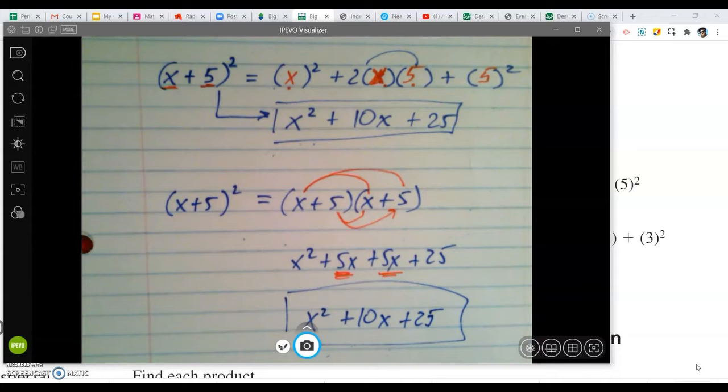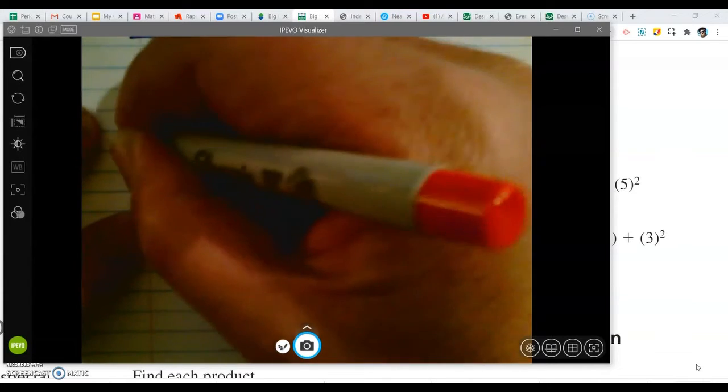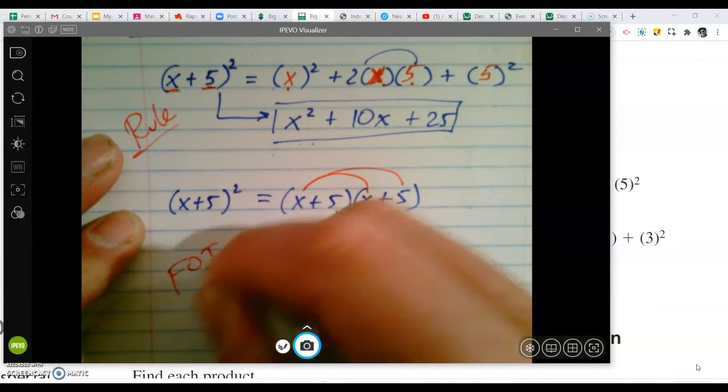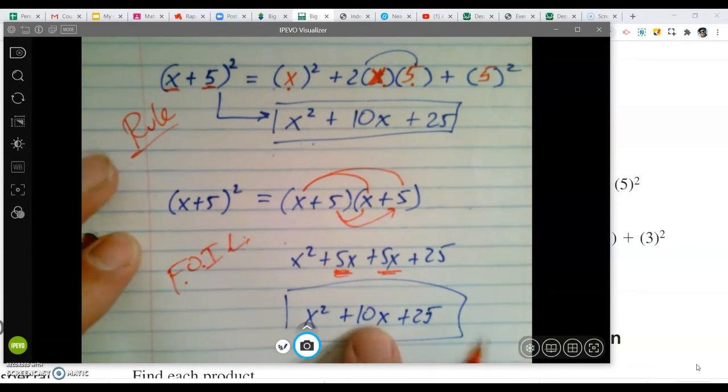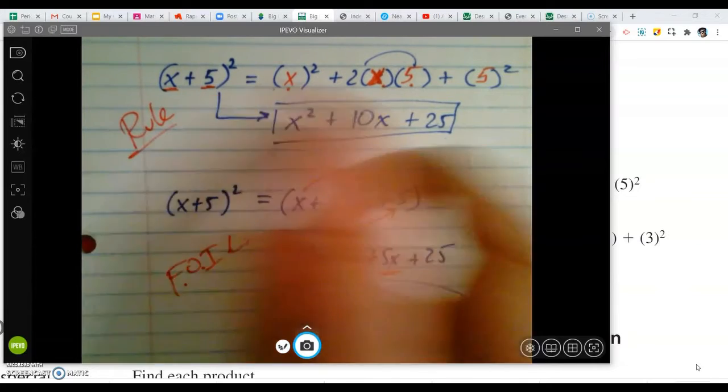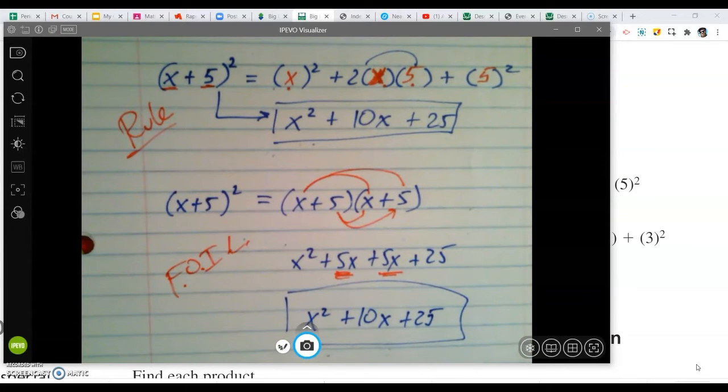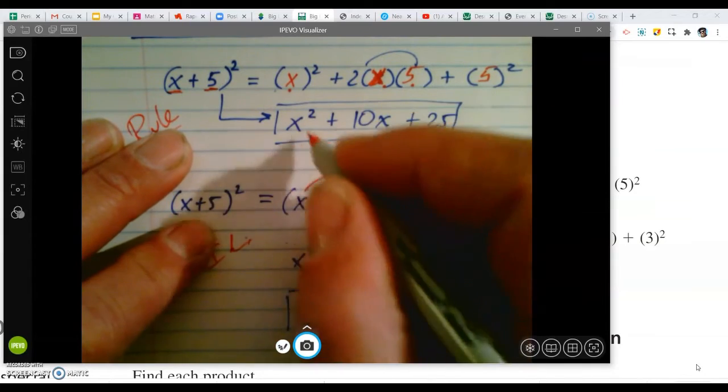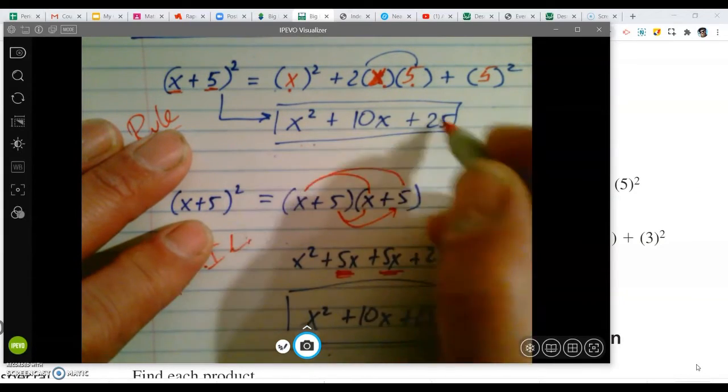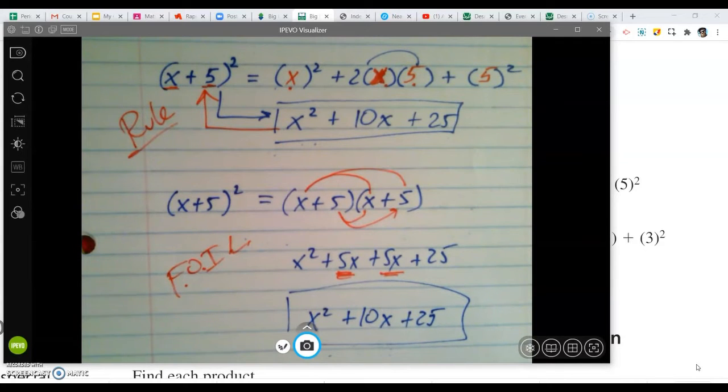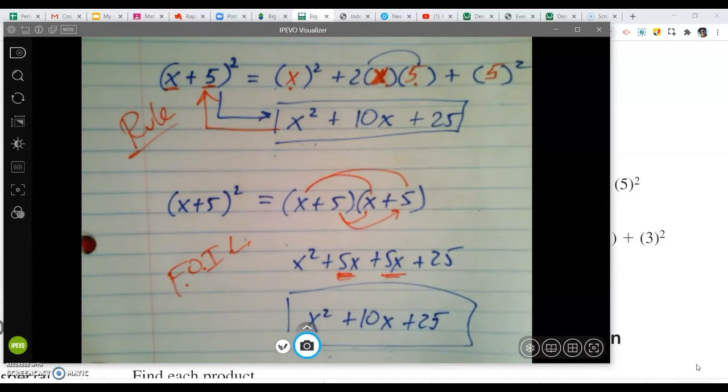So, one time we did it with a rule. Up here, we followed the rule. And here, we did FOIL. Both of them will get you the same answer. Which one's more work? That's really up to you. The more homework you do, if you see these patterns a lot, it does help to recognize. More likely, though, you're going to be able to recognize if you can go backwards to get back to that, once we learn factoring in a later section.